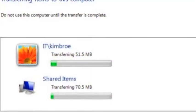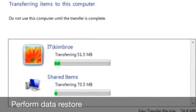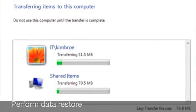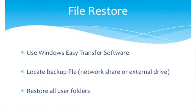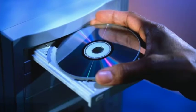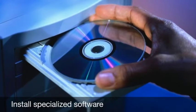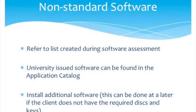Now that you have the new computer set up, go ahead and log in, locate and run the client's backup file. It will launch the Windows Easy Transfer software, which we use to restore the files. Make sure to restore all user folders to the new computer. Once the files are restored, install any non-standard software identified earlier in the software assessment. The client should have already provided you with the software installation disk and the license keys. University license software may be found in the application catalog.